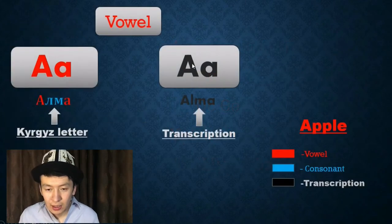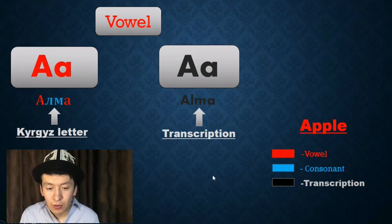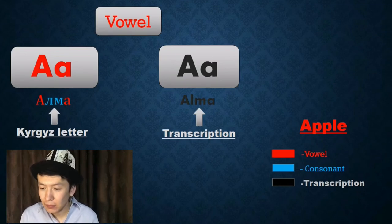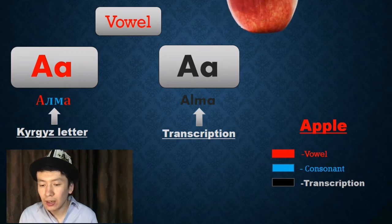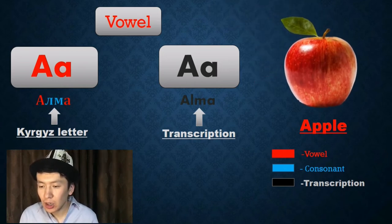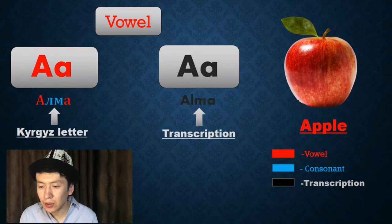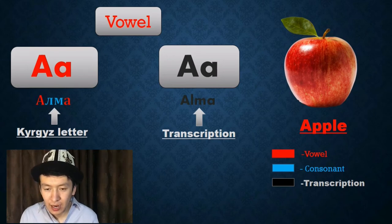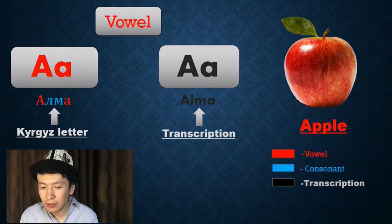So guys, let's start. The first letter is A — it's so simple: A. Next to the transcription you can see an example with a picture. Apple — in Kyrgyz, Alma. Apple.